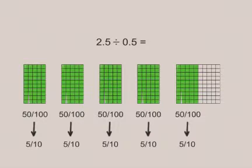Students then count to see how many equal-sized groups of 5 tenths were formed from 2 and 5 tenths. There are 5 groups of 5 tenths in 2 and 5 tenths, or 2 and 5 tenths divided by 5 tenths is 5.